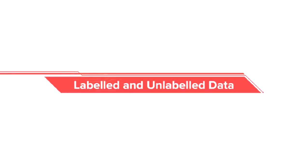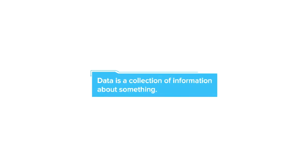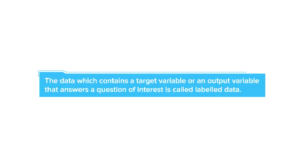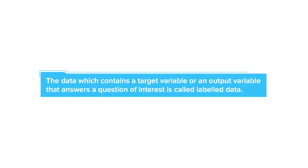Before we start our discussion on supervised and unsupervised learning, it is important we understand what is labeled and what is unlabeled data. As we had learnt earlier, data is a collection of information about something. And if this data contains a target variable or an output variable that answers the question of interest, then we say that it is labeled data. Don't worry — let's take some examples to understand this better.